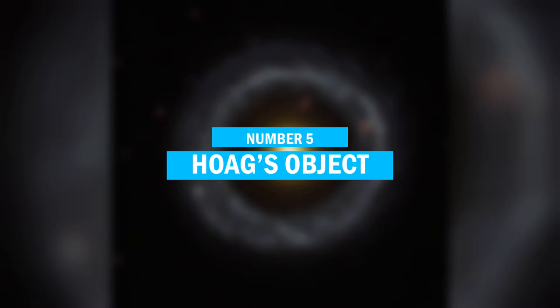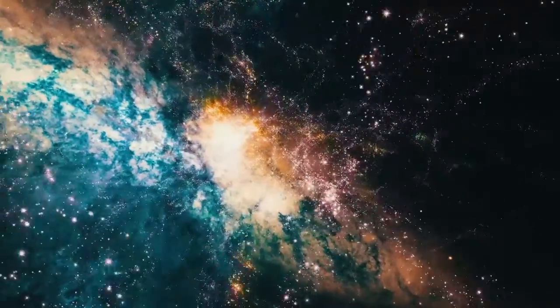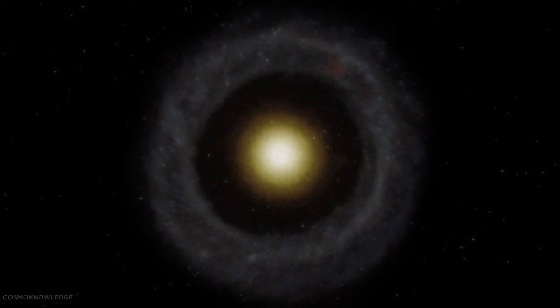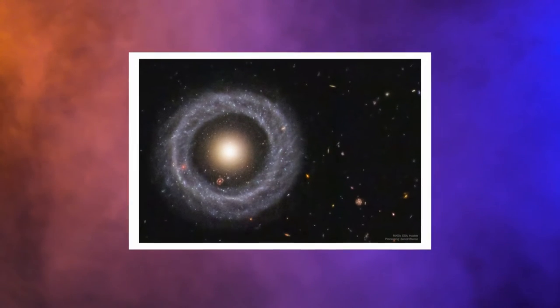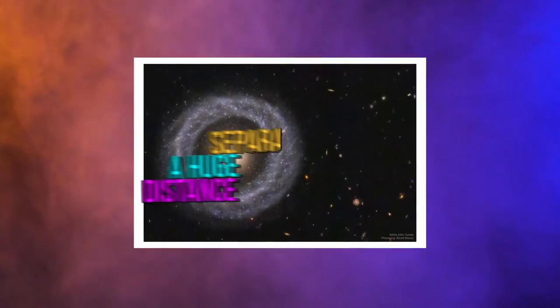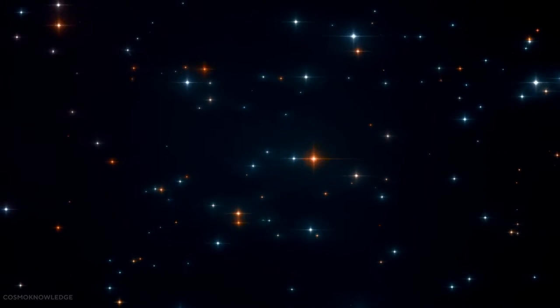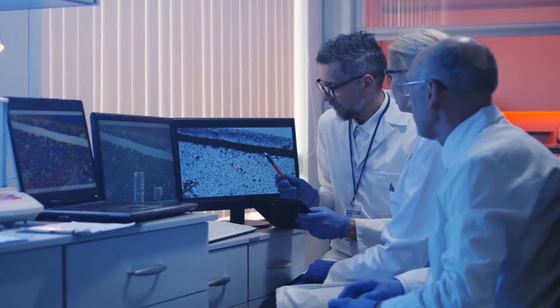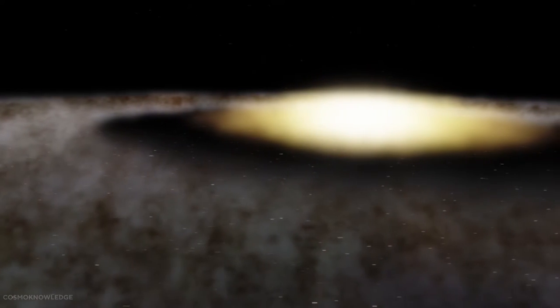Number 5. Hoag's Object. Hoag's Object is a bizarre yet beautiful ring galaxy found by Arthur Hoag in the 1950s. Hundreds of billions of blazing blue stars make up the ring. Outside of its outer blue ring, Hoag's object has an interior yellow circle known as the nucleus. The galaxy is remarkable in that the inner and outer rings of stars are separated by a huge distance. And although star clusters are likely to exist between the circles of stars, they are clearly too faint to be seen. Scientists have been attempting to figure out the structure of this galaxy and how it was formed for years because it's so interesting and beautiful to observe.